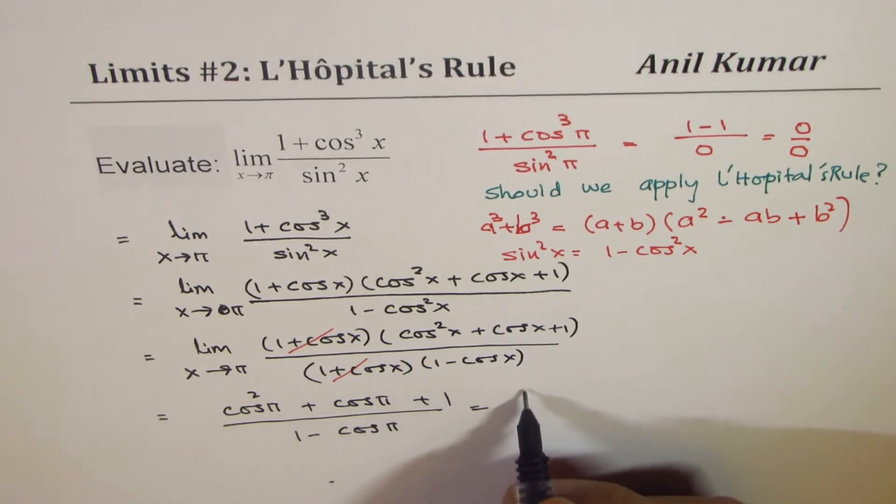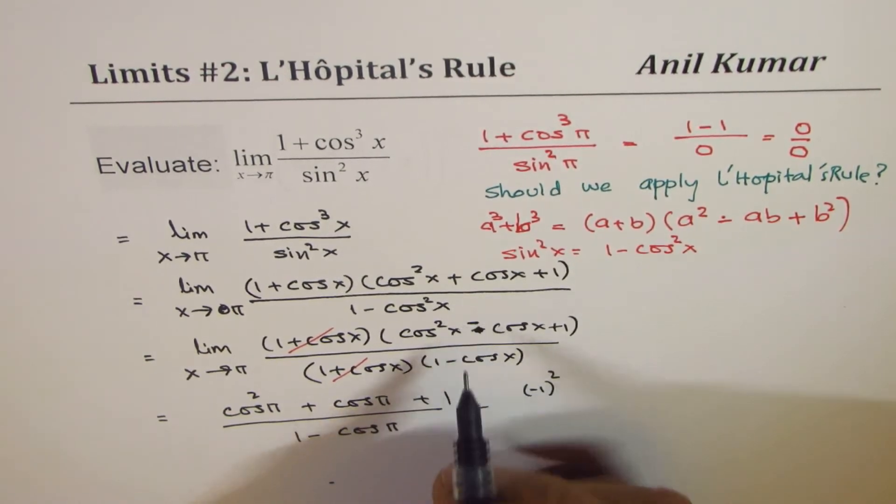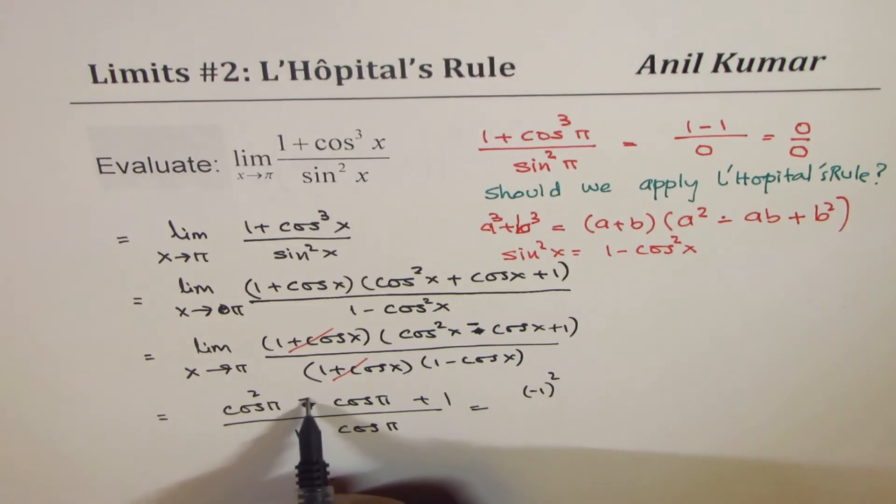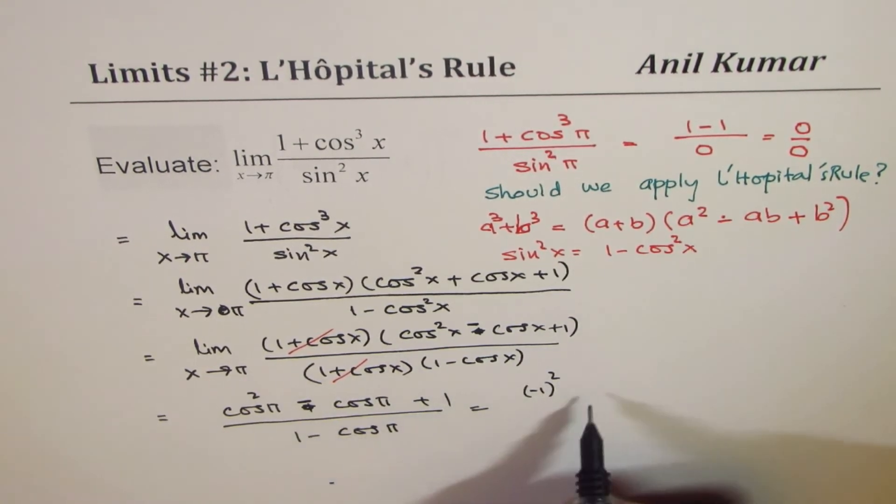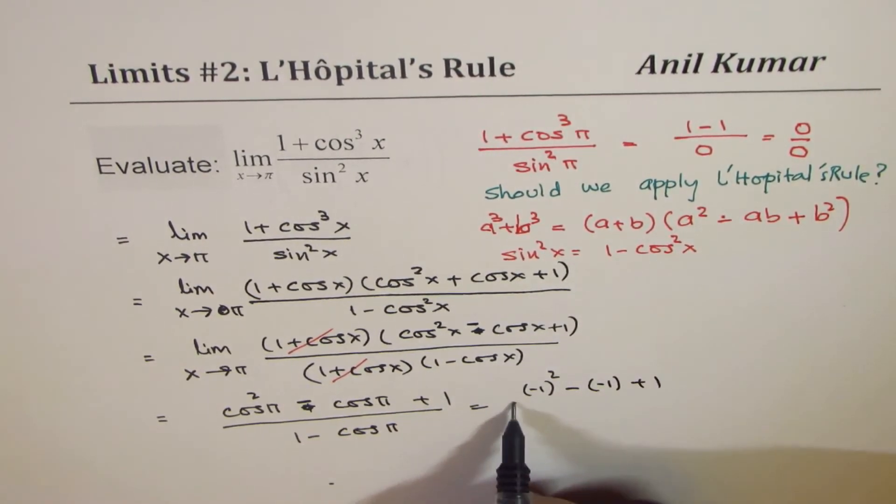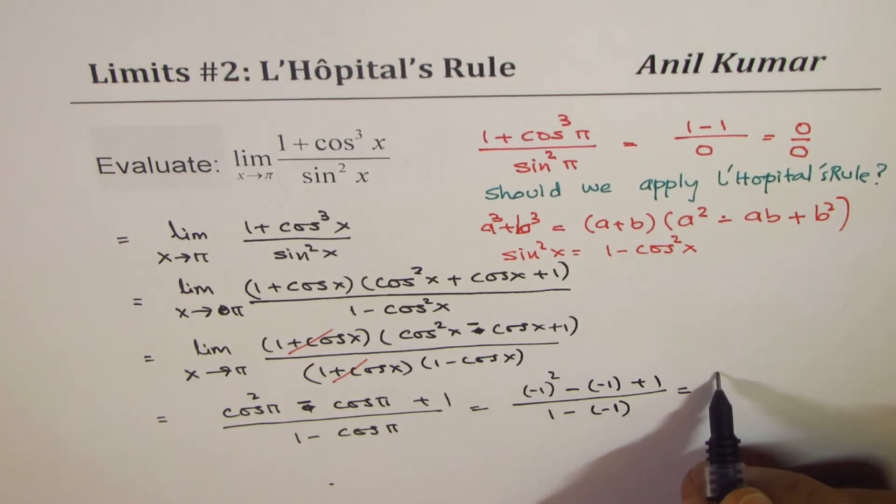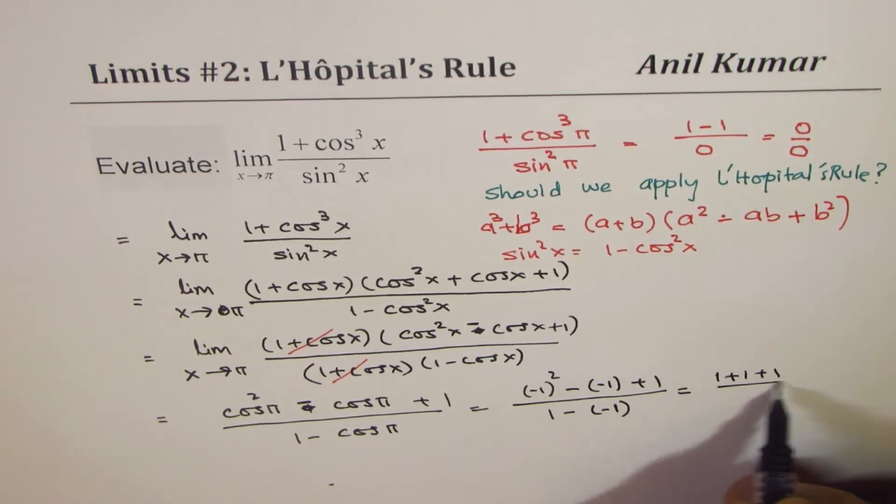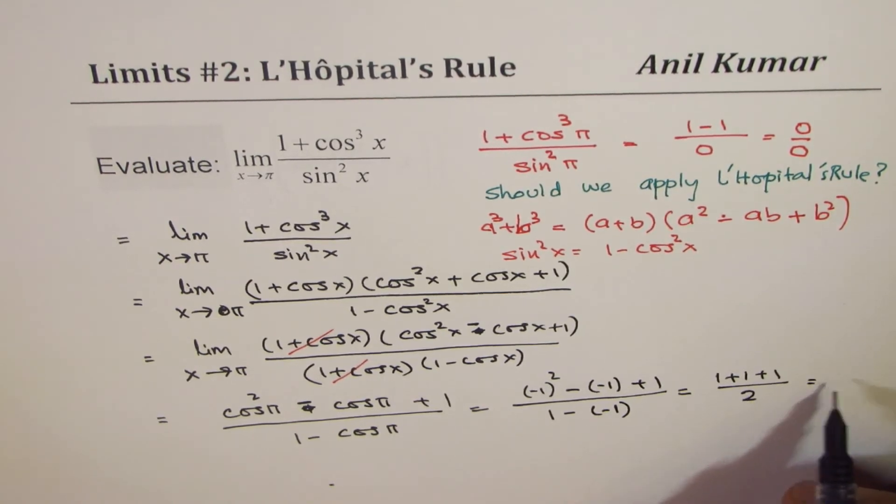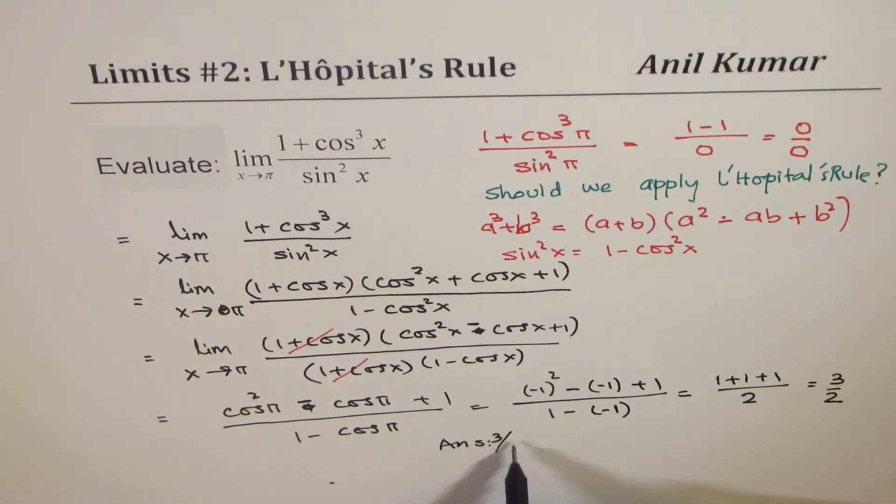Cos²π is (-1)². And cos π... sorry, the formula is wrong, this should be negative here. So -cos π = -(-1) = 1, plus 1, divided by 1 - (-1) = 2. That gives 1 + 1 + 1 over 2. The answer is 3/2. You can easily find this limit and the answer is 3/2.